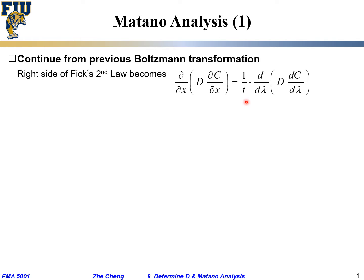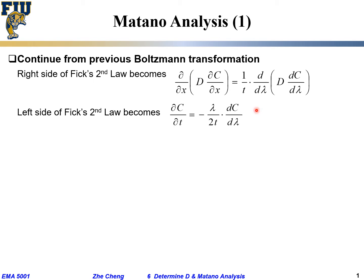After we did the transformation, it is 1 over t times d/dλ of capital D times dc/dλ — that's the right side of Fick's Second Law. The left side is the partial differential of c with respect to time, which from the previous slide is λ over 2t times dc/dλ.